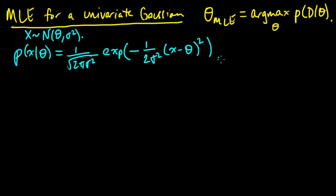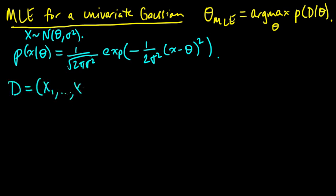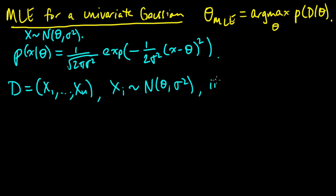That is the density for a univariate Gaussian. Now for the typical setup, we're given some data x1 through xn, and each of these xi's is drawn according to this same distribution — Normal(theta, sigma squared) — and they are iid.